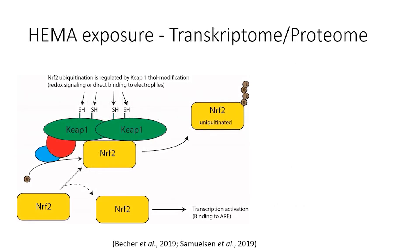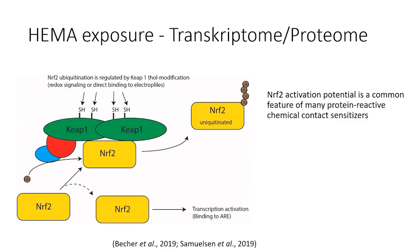In two different studies, we measured transcriptional and proteomic changes after exposure of two cell lines to HEMA at concentrations that did not result in measurable viability loss. In both studies, we observed an increase in transcription and corresponding proteins of several cytoprotective genes. Many of these changes were mediated by increased NRF2 activity in the cells. NRF2 is a transcription factor that is activated partly by modification of thiols on the KEAP1 protein. Activation of NRF2 is a property observed for many contact-sensitizing chemicals. In line with this, HEMA is also known for its potential to cause allergic contact dermatitis.